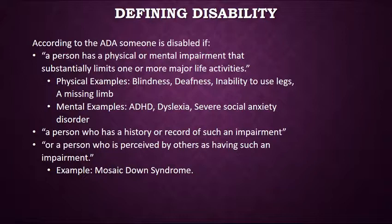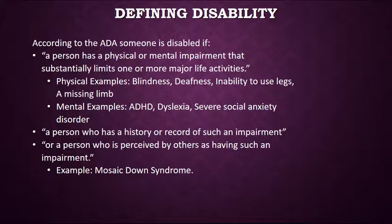A person who has a history or record of such an impairment — that's very important to keep in mind. If there's no record of the person having been disabled, then government officials, including teachers, cannot actually treat the person as if they have a disability. If you are ever diagnosed with a disability, you need to inform those people so that they can help you. Additionally, a person is disabled if they are perceived by others as having such an impairment — this is the social component of how we deal with disabilities in our society.